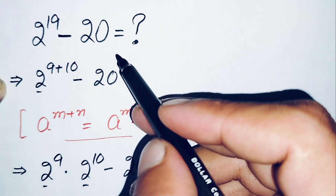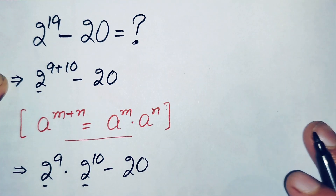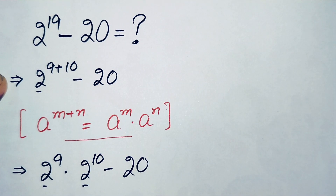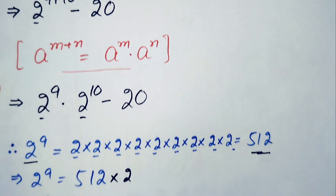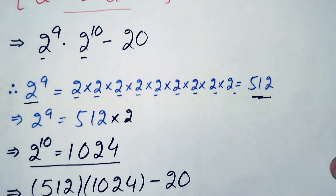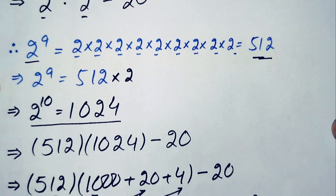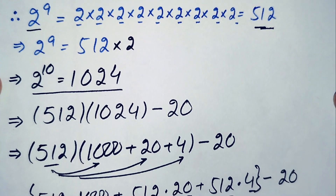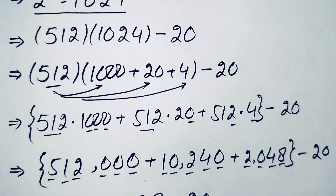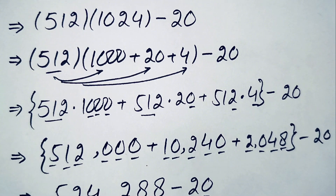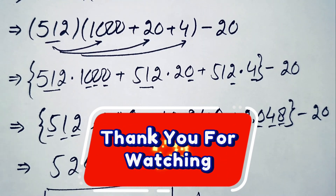So 524268 is our answer and the value of this nice and interesting simplification math problem. If you like this video, don't forget to subscribe to my YouTube channel for more interesting step-by-step math videos. Thanks for watching!